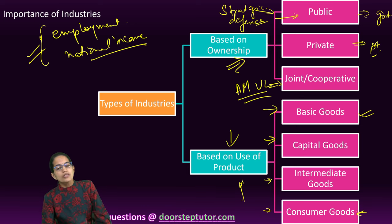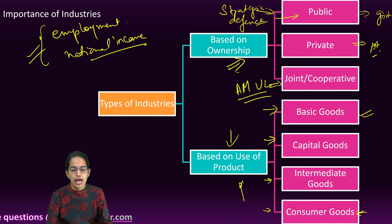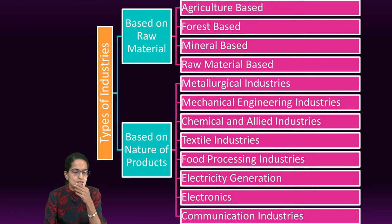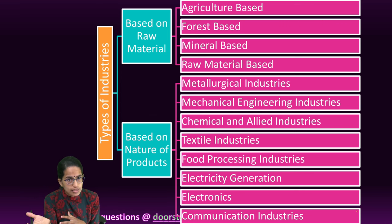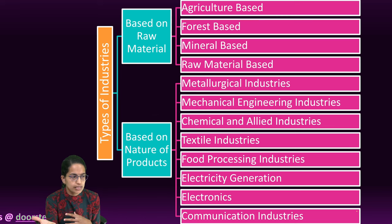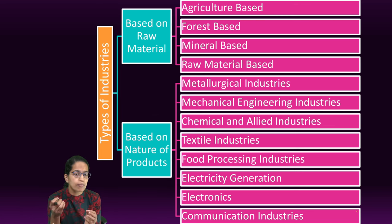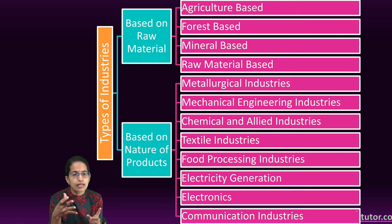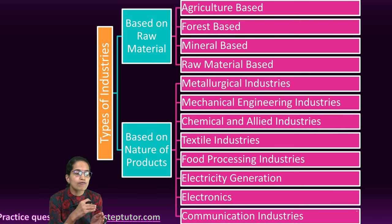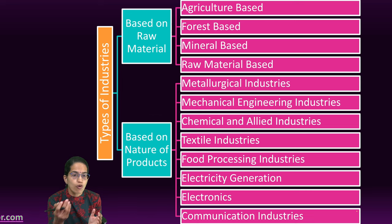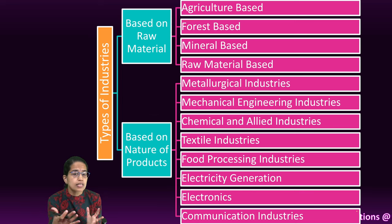Consumer goods such as clothing and food are used directly by consumers, and industries producing them are called consumer good industries. The next classification is based on raw material. An industry relying on agriculture-based products is called an agro-based industry — cotton textile is a good example. We also have mineral-based industries, with iron and steel as a good example. Then there are forest-based industries where products from forests are used, for example manufacturing and selling honey.